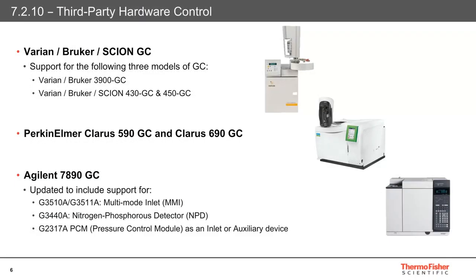For third-party hardware control, we start with support for the Varian, Bruker, and Scion GC versions. Three new models can now be controlled: the 430, 3900, and 450 GCs. The new driver can be found in the Drivers folder on the Chameleon distributable source media. We can also now control the PerkinElmer Claris 590 and 690 GCs. Both these configurations are available using the Claris 580-590 and the 680-690 new driver versions.